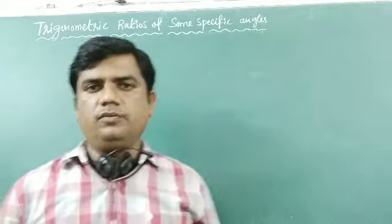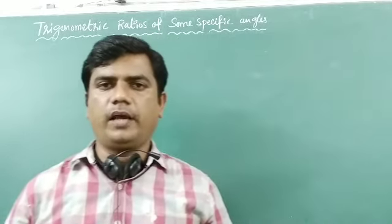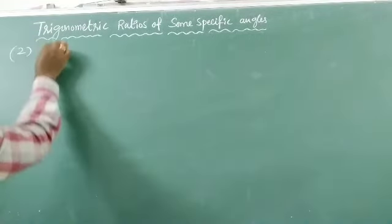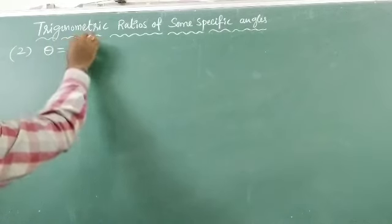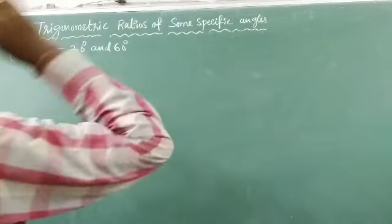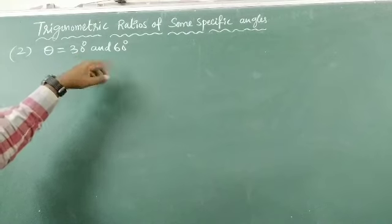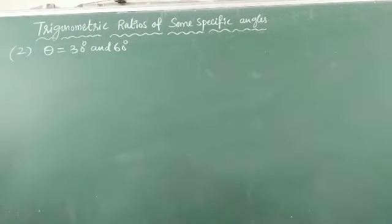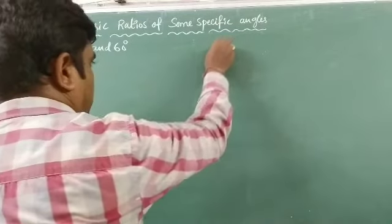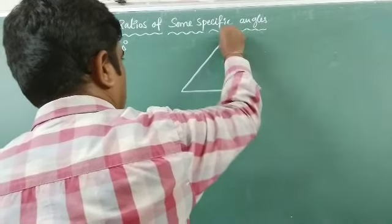Next, when the angle value is 30 degrees and 60 degrees. In this second case, theta is 30 degrees and 60 degrees. By considering only one triangle, we can find all trigonometric ratios of 30 degrees and 60 degrees. For this, we are considering one equilateral triangle — here, ABC is one equilateral triangle.